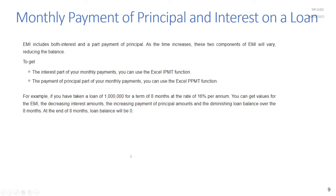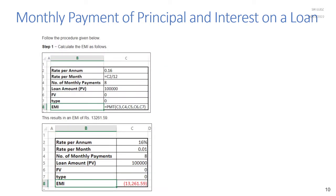As time increases the two components of EMI — interest and principal — will vary, reducing the balance. To get the interest part of monthly payments use the Excel IPMT function; for the principal part use the PPMT function. For example, if you have taken a loan of 1 million for 8 months at 16% per annum, you can get the EMI, the decreasing interest amounts, the increasing principal payments, and the diminishing loan balance over the 8 months.